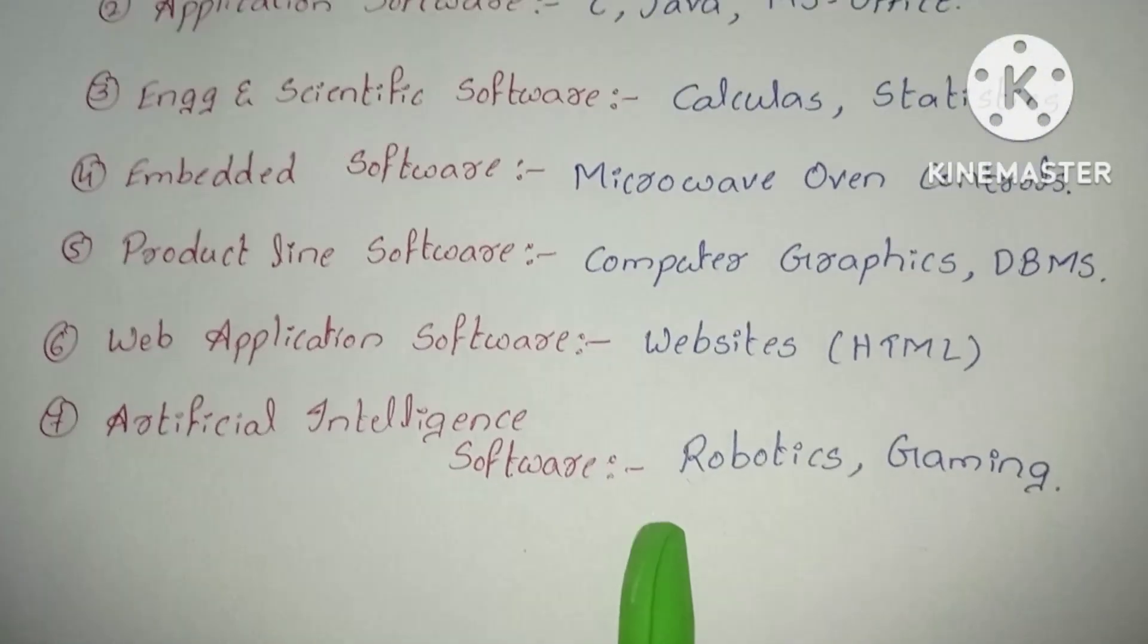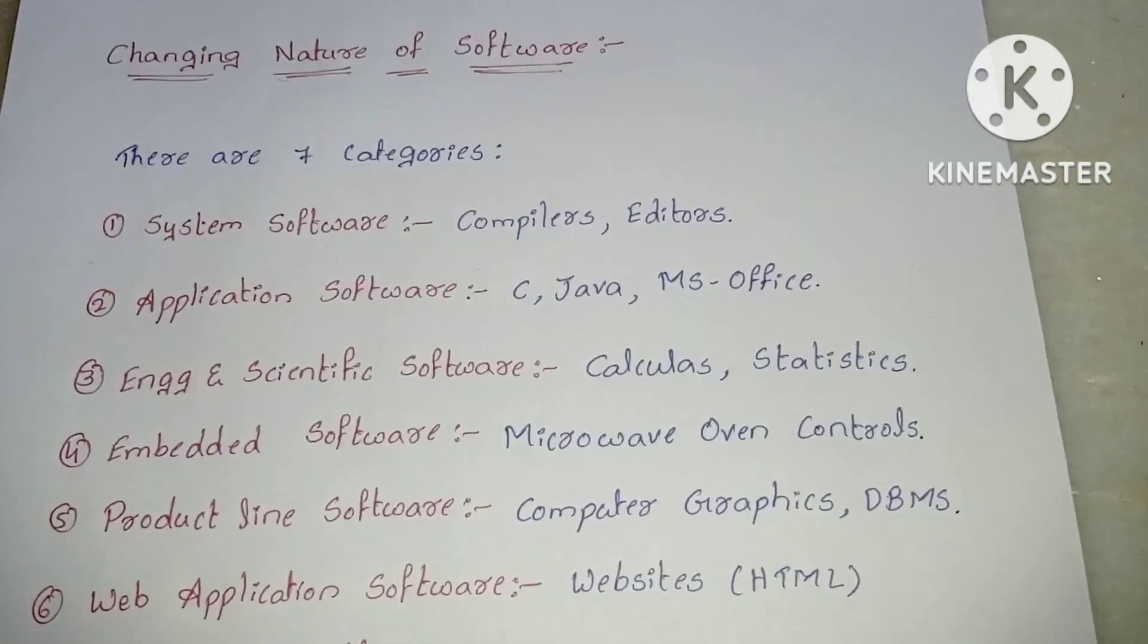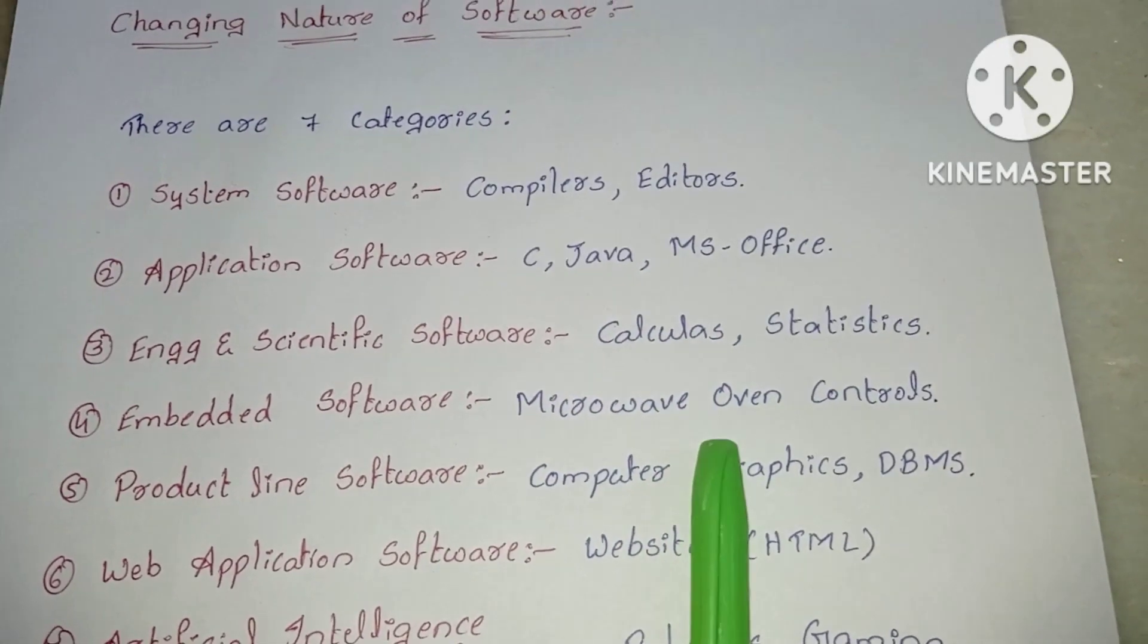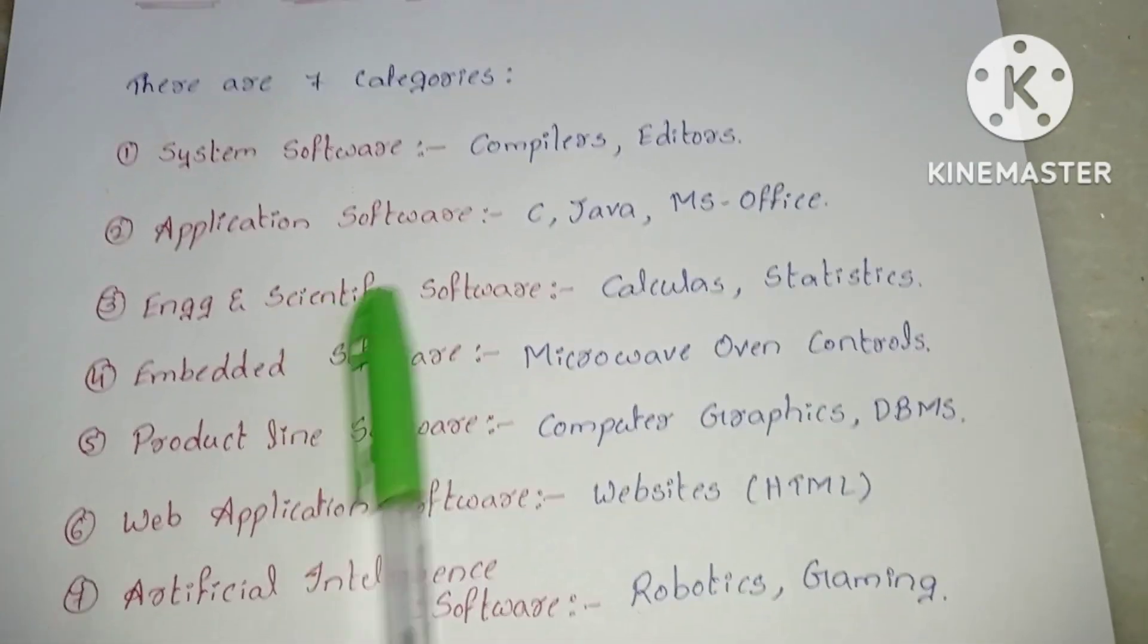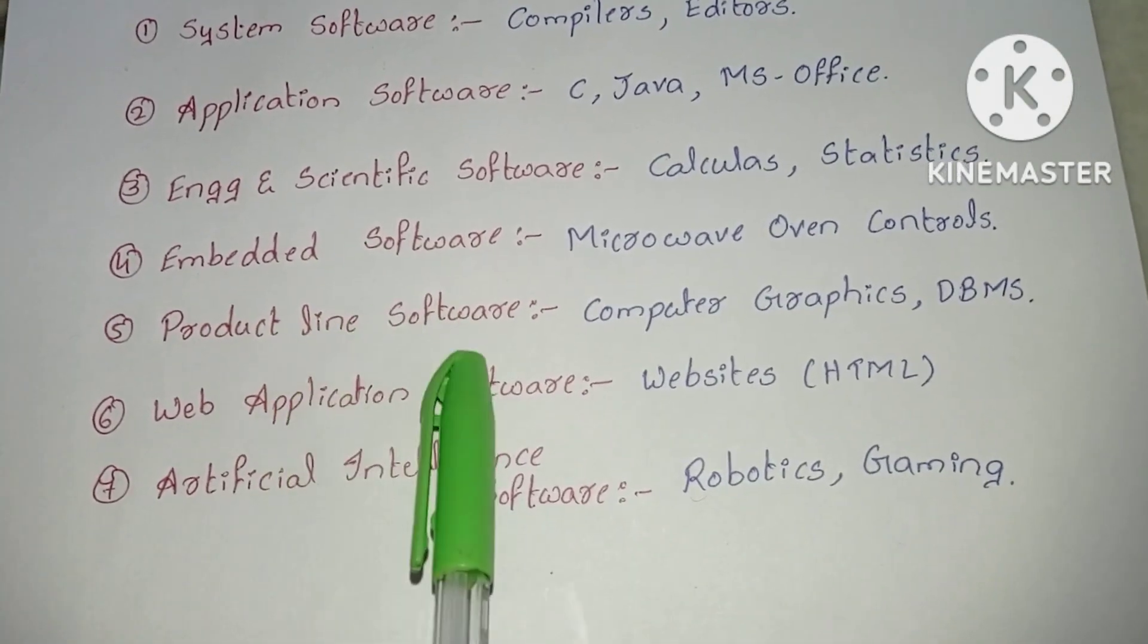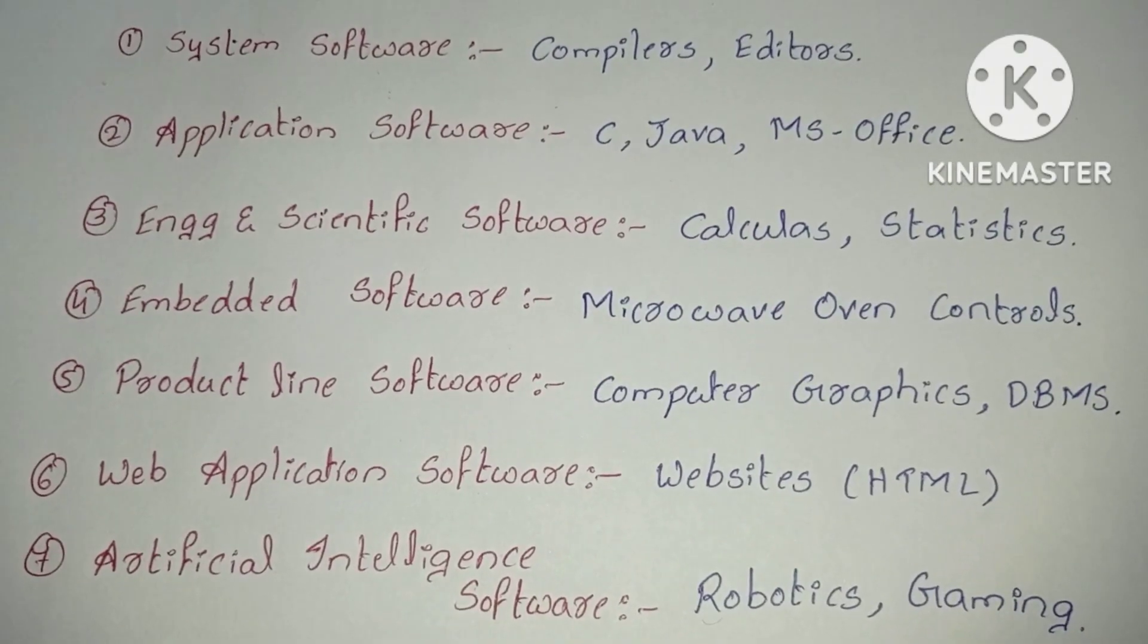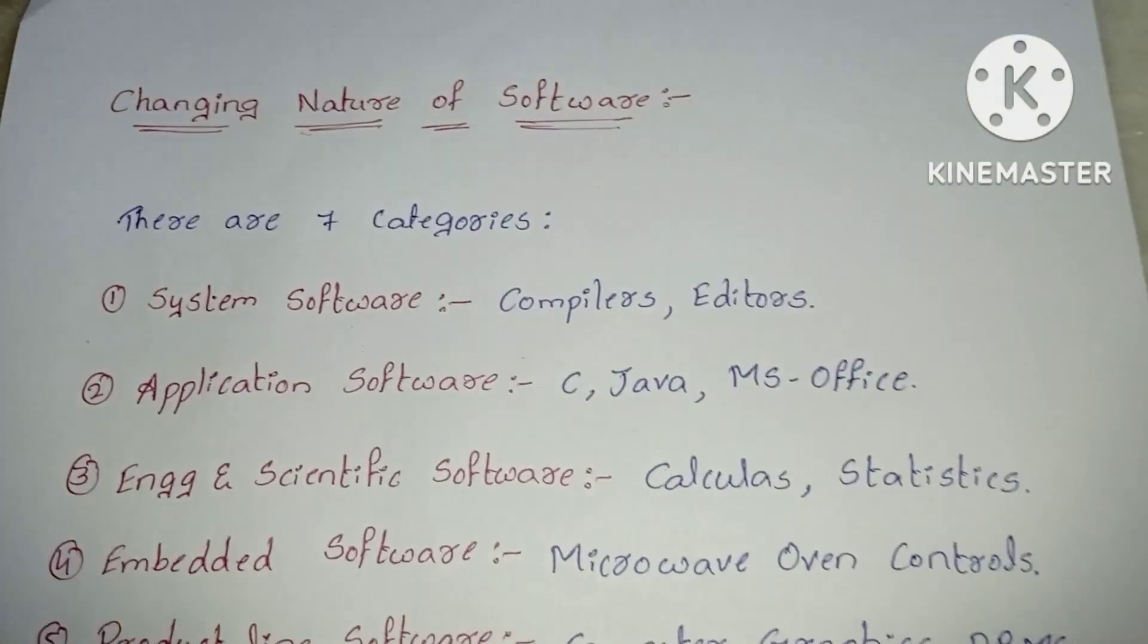This is about changing nature of software. Software also changes its nature based on which software we are going to develop. There are seven categories: system software, application software, engineering and scientific software, embedded software, product line software, web application software and artificial intelligence software.